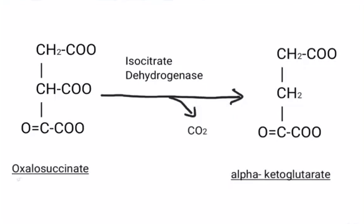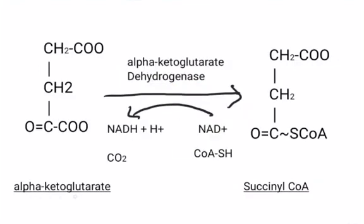Oxalosuccinate gets converted into alpha-ketoglutarate in the presence of the enzyme isocitrate dehydrogenase. Here, carbon dioxide is liberated. Now alpha-ketoglutarate, in the presence of the enzyme alpha-ketoglutarate dehydrogenase, gets converted into succinyl CoA.